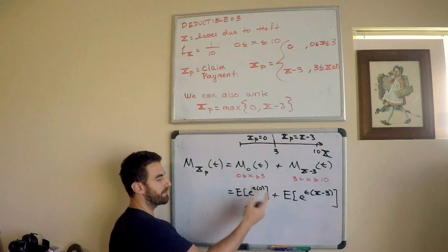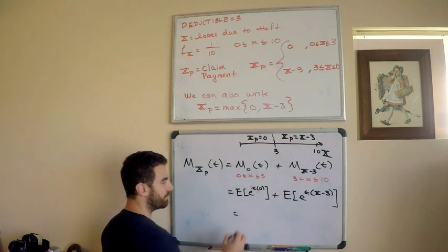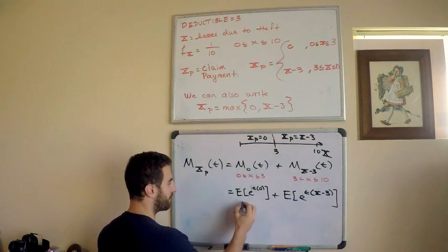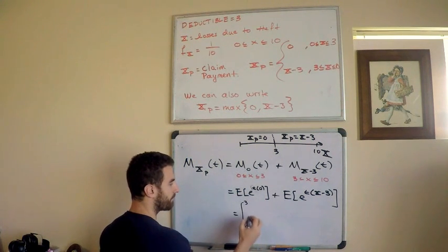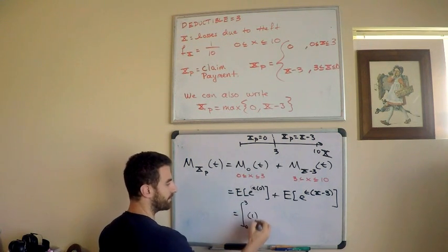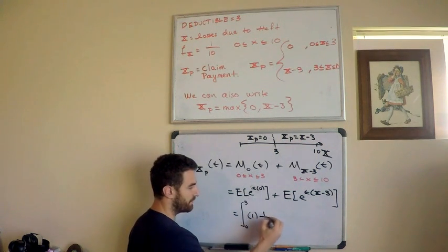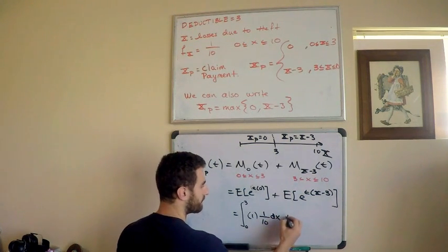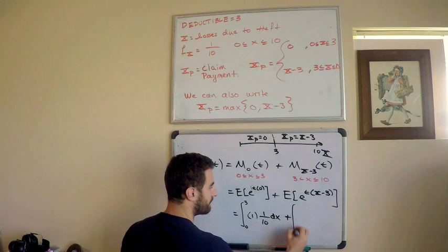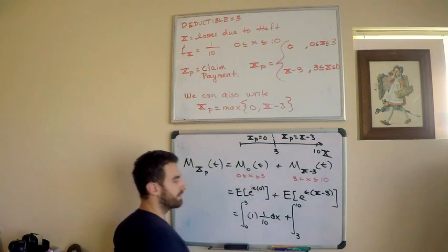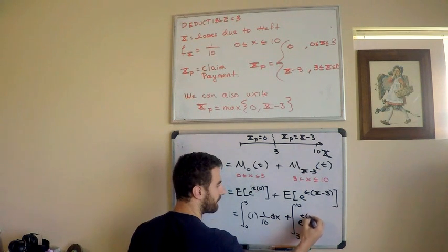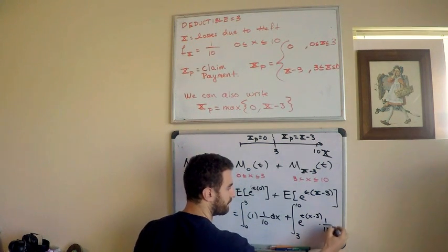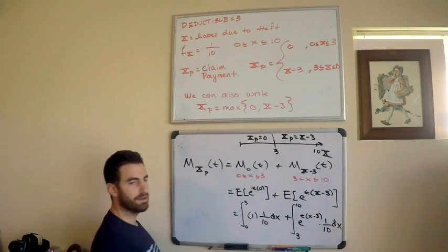So, we're looking good. I'm just going to now use a definition of moment generating function. Remember that this is equal to the expected value, the expectation of e to the t times whatever your random variable is. So, t times, in this case my random variable is zero. So, e to the t times zero plus the expectation of e to the t times my random variable times x minus three. There it is just using the definition. Of course, e to the t times zero is one. So, this is the expected value of one. But let me just write it actually as an integral because we need to keep track of this information here.